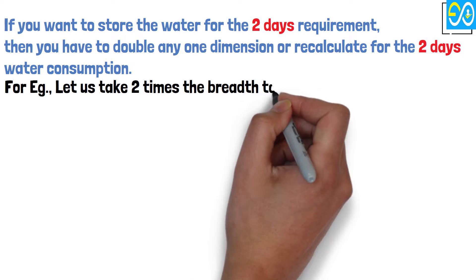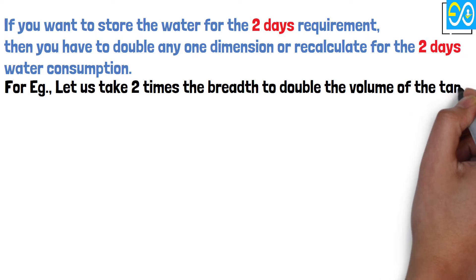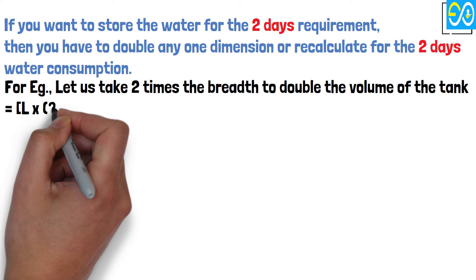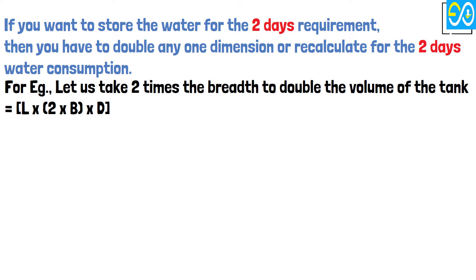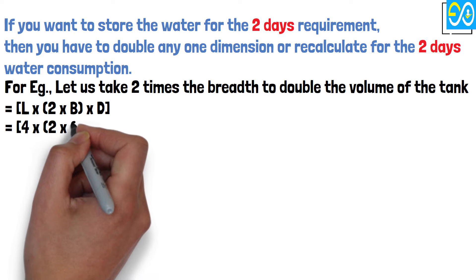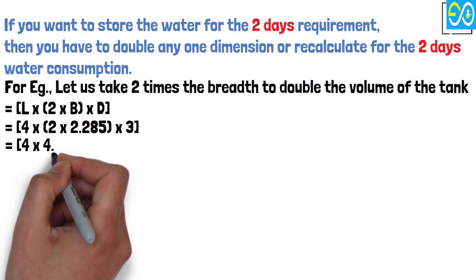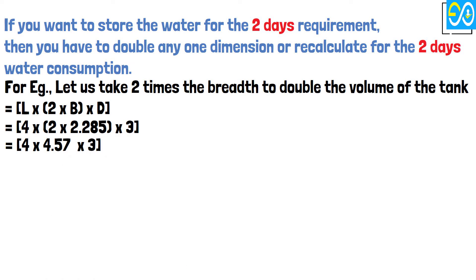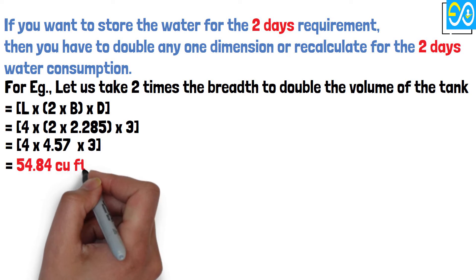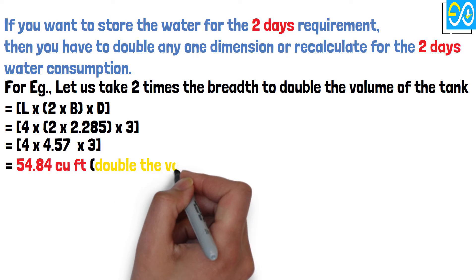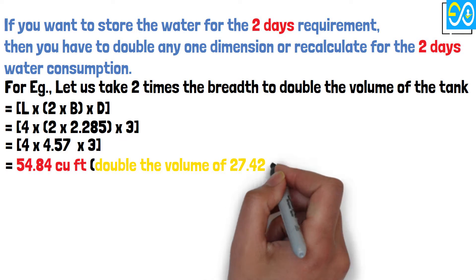This equals L times 2 times B times D, which equals 4 times 2 times 2.285 times 3, equals 4 times 4.57 times 3, equals 54.84 cubic feet, double the volume of 27.42 cubic feet.